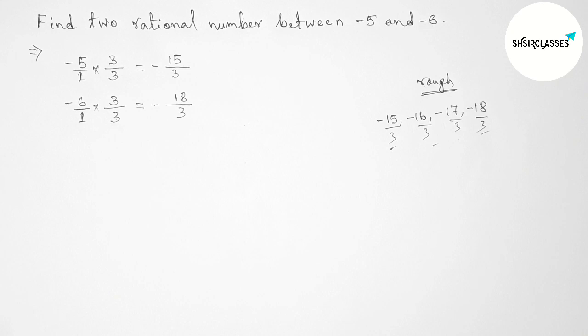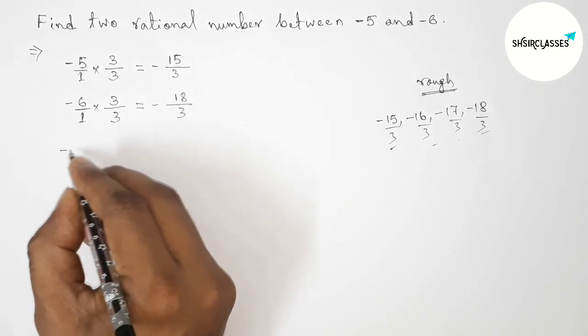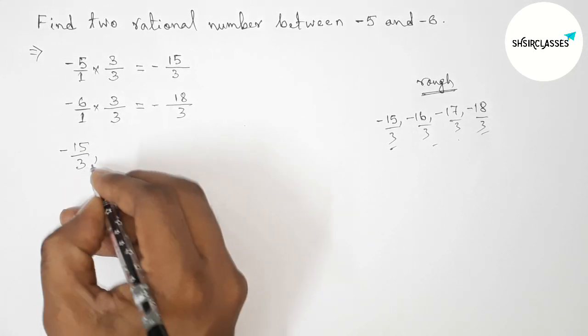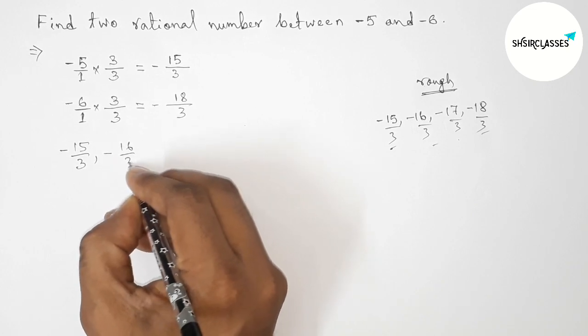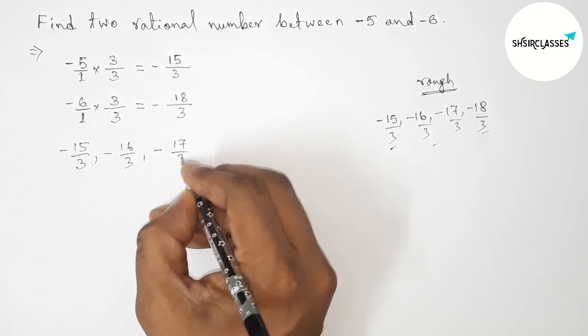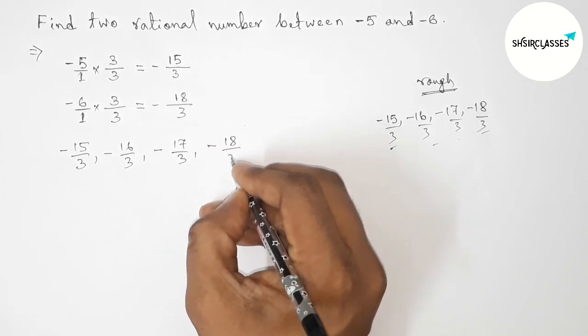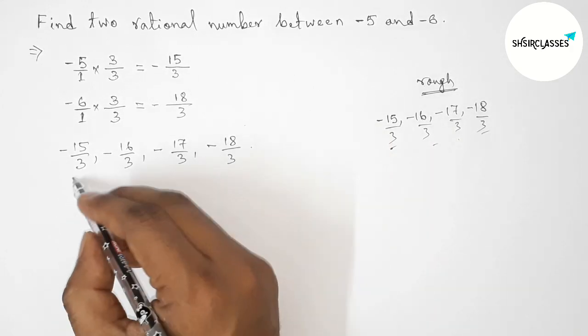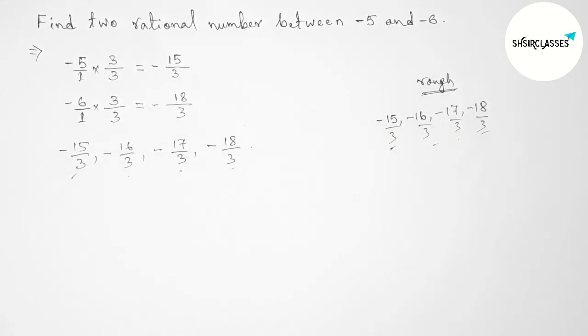Write down all the rational numbers: -15/3, -16/3, -17/3, -18/3. Between these, we have the two rational numbers we need.